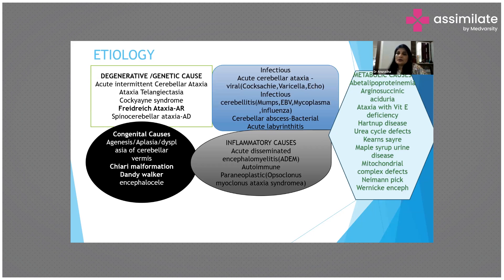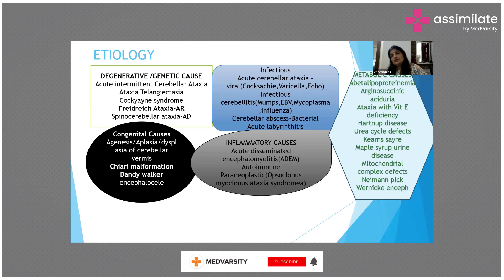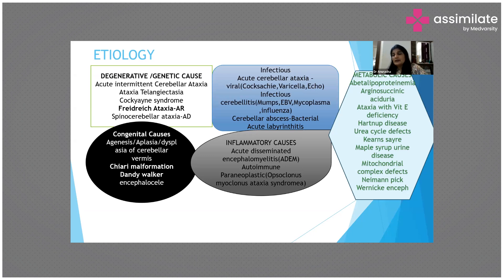Metabolic causes are also very important. Common metabolic causes include vitamin E deficiency, vitamin B1 deficiency, abetalipoproteinemia, Hartnup's disease, mitochondrial disorders, maple syrup urine disease, urea cycle defects, and numerous other metabolic diseases. We should not forget common causes like vitamin E deficiency, multivitamin deficiency, and abetalipoproteinemia, which are quite common.